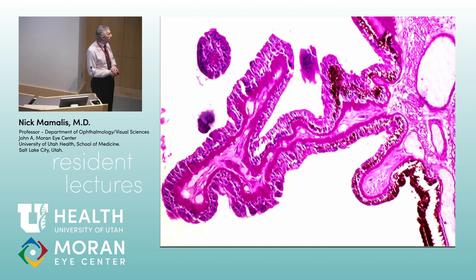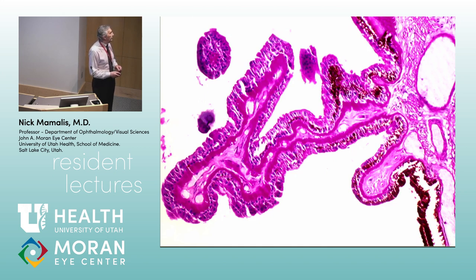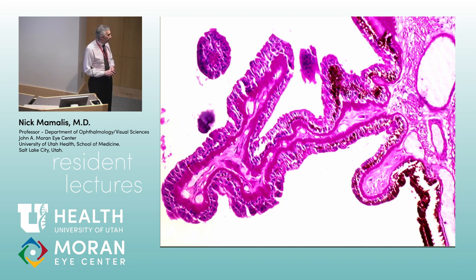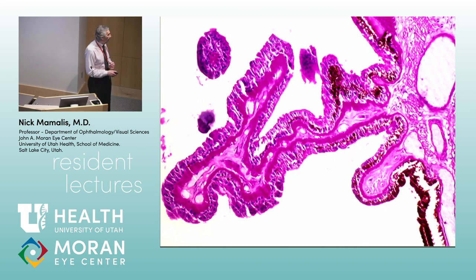Looking at the ciliary body with a PAS stain — which stains basement membranes — this shows another finding in diabetic eyes: thickening of the basement membrane in the ciliary body. This is a PAS stain demonstrating thick basement membrane. When I was doing my pre-residency fellowship with Dave Apple, he had me take photos for the boards. I took a nice picture of ciliary body PAS basement membrane thickening, sent it in, and five years later on my board exam — there was my picture.